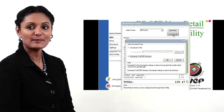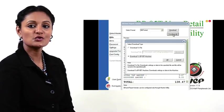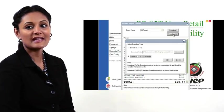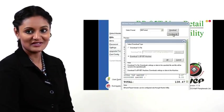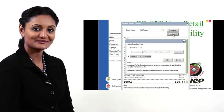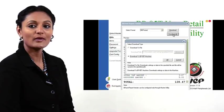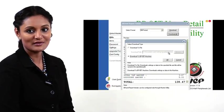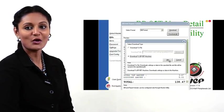In the next panel, choose 'Download to BP-85 machine'. With the printer in programming mode, click OK.